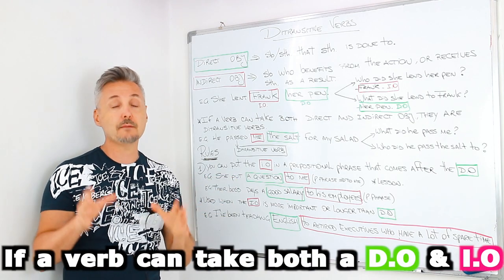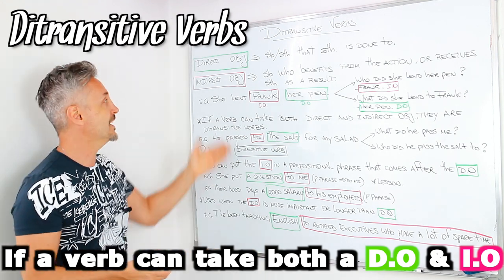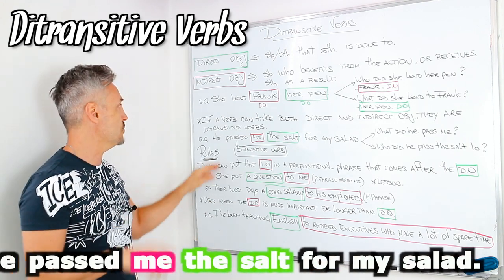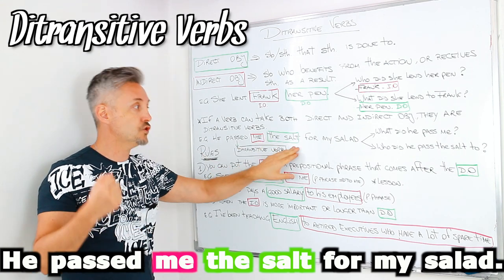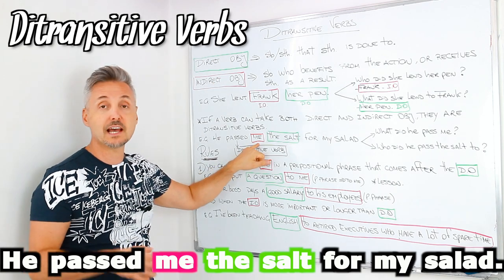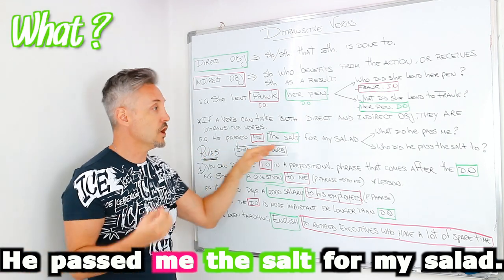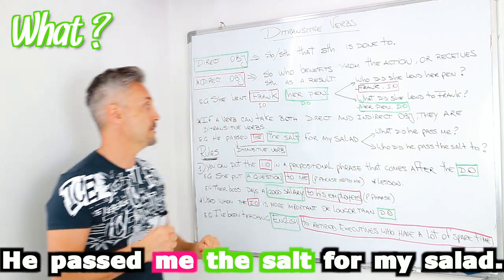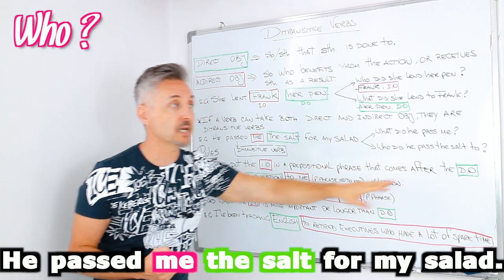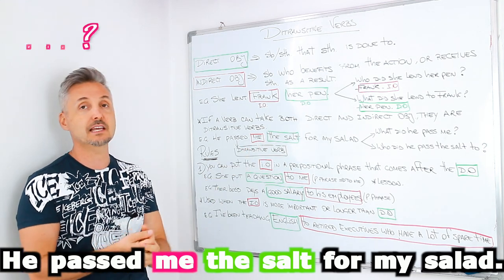Now, if a verb can take both the direct and indirect object, they are called ditransitive verbs. So in this case, to lend is a ditransitive verb. From the introductory example — he passed me the salt for my salad — pass is a ditransitive verb because we can have both the direct and indirect object in the same sentence. He passed what? The salt — that is the direct object. Who did he pass the salt to? Me — and me is the indirect object.